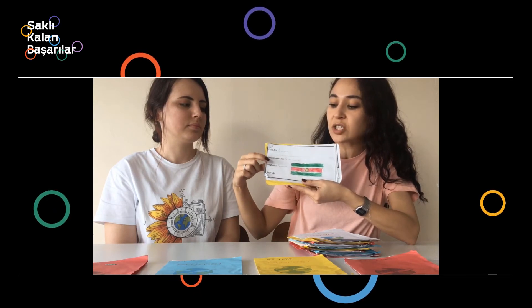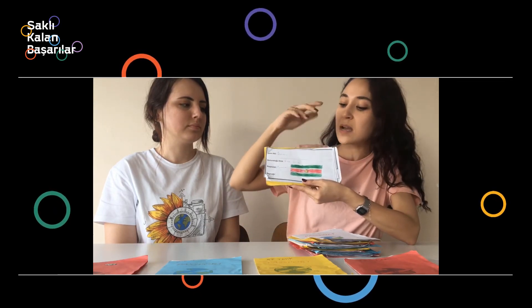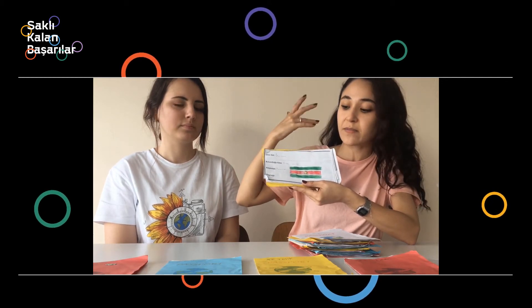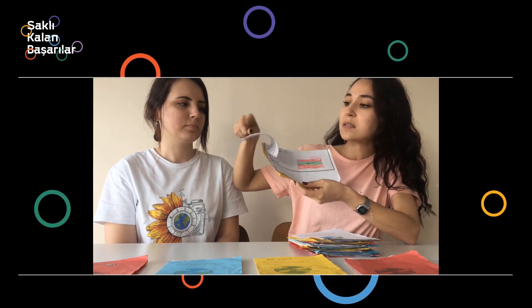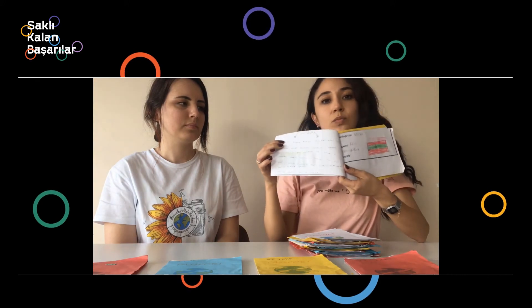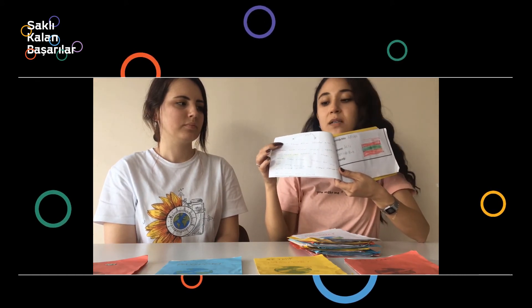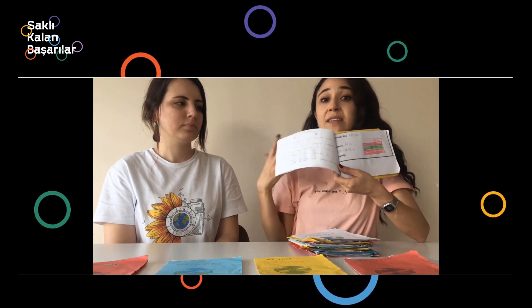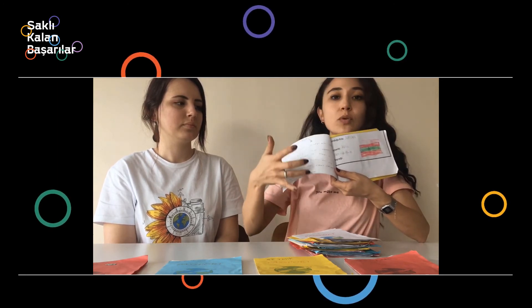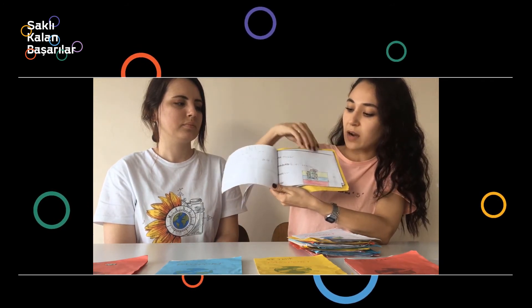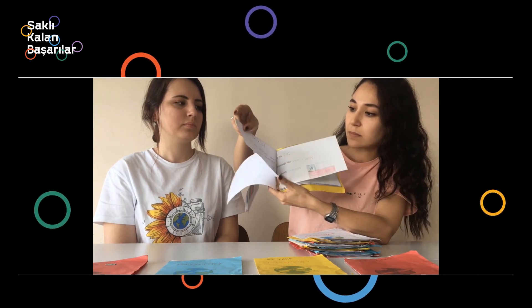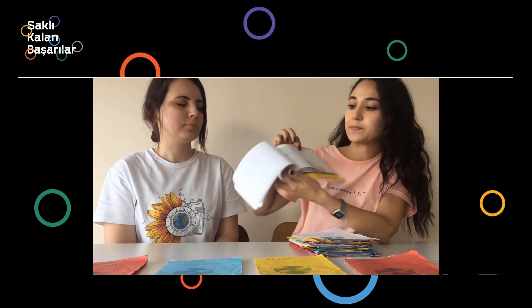We began filling in our passports. Each week we selected one country and, after researching it, filled in our passports in class. On the front we wrote the country's name, the continent it belongs to, its capital, and information about its flag — then drew the flag and made inferences about its colors and symbols. On the back we recorded the country's location, foods, way of life, population, interesting features, and our own preferred characteristics.